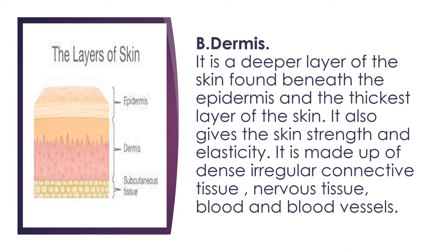The second layer of the skin is the dermis, which is the thickest layer of the skin. It gives the skin strength and elasticity. It is made up of dense irregular connective tissue, nervous tissue, blood, and blood vessels. This layer also contains sweat glands, oil glands, and hair follicles. Nerves are also found in this layer, which are essential for sensations such as touch, pain, heat, and pressure.